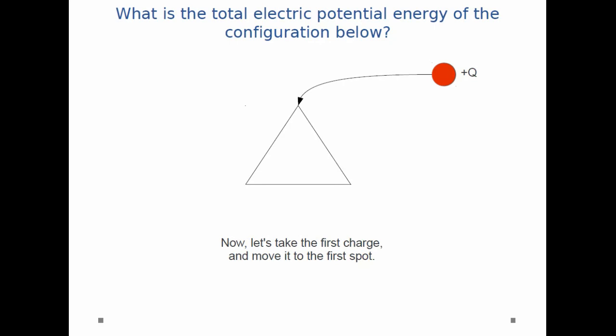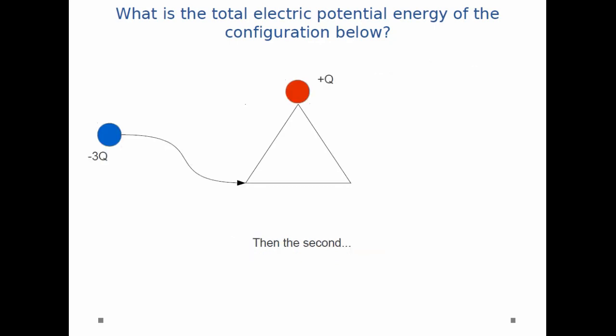Then, I'm going to move the first point charge into the first spot on the triangle, then I'm going to move the second, and then I'm going to move the third. But between each step, after I put the first point charge on, after I put the second point charge on, and after I put the third point charge on, we're going to calculate the potential energy. So, let's begin.